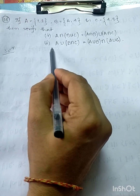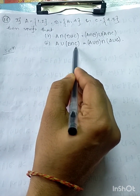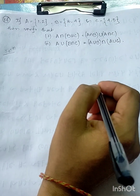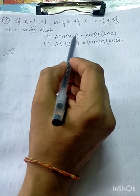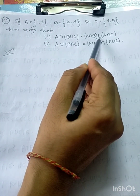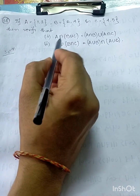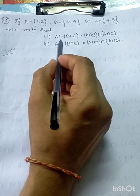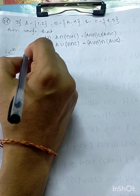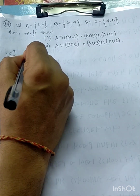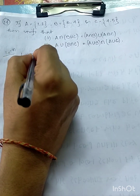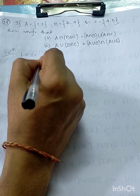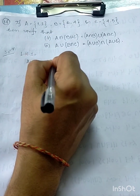Similarly, verify that A union B intersection C equals A union B intersection A union C. So first we can verify the LHS. LHS is equal to A intersection B union C.